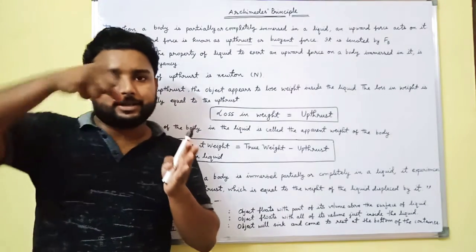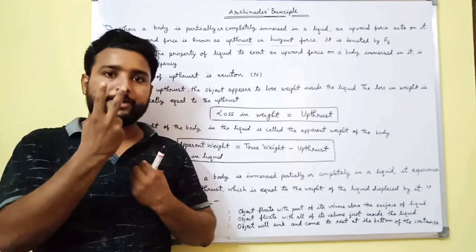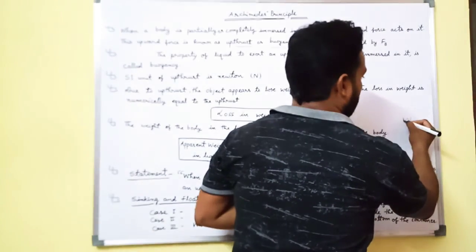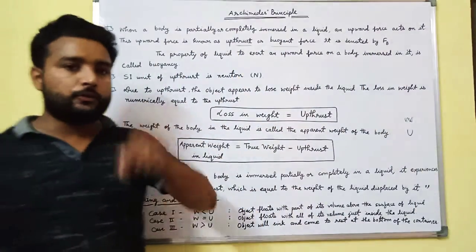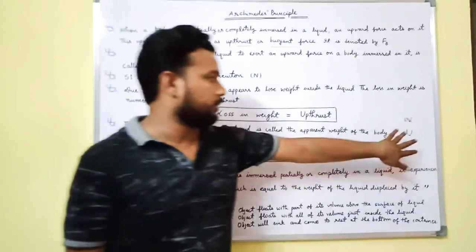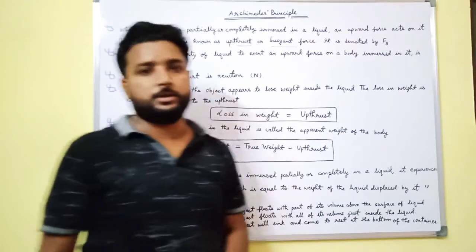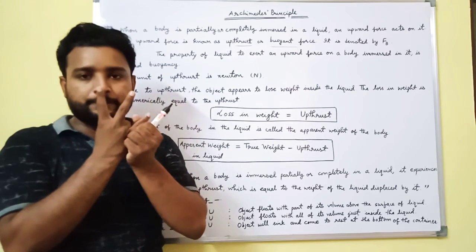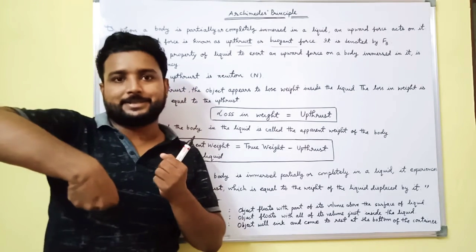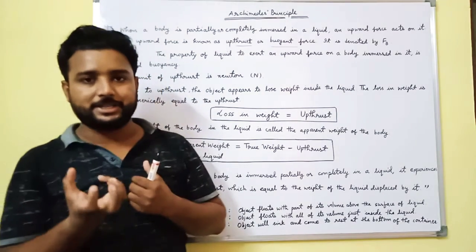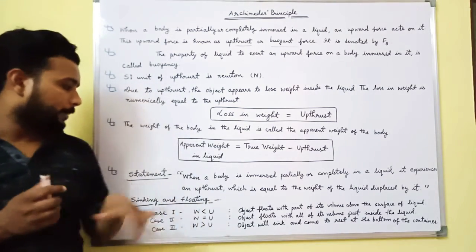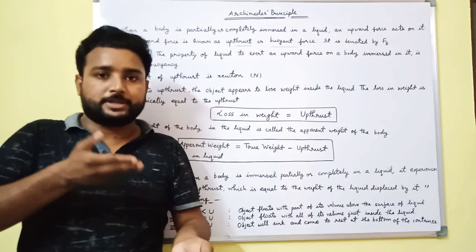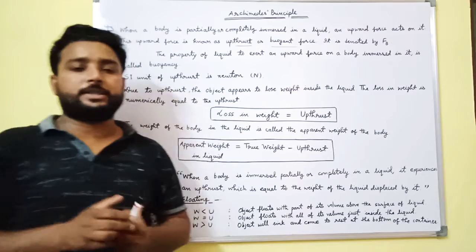When a body is immersed in a liquid, two forces act on it: first, the weight of the body acting downward, and second, the upthrust acting upward. The difference between weight and upthrust determines what happens to the body — whether the weight is more than the thrust, the thrust is more than the weight, or they are equal.